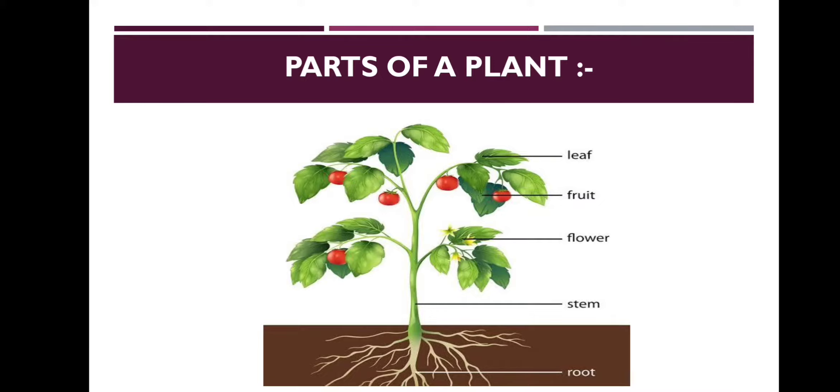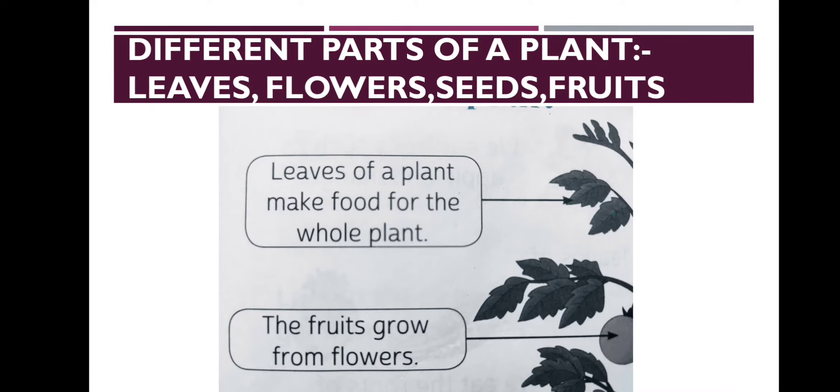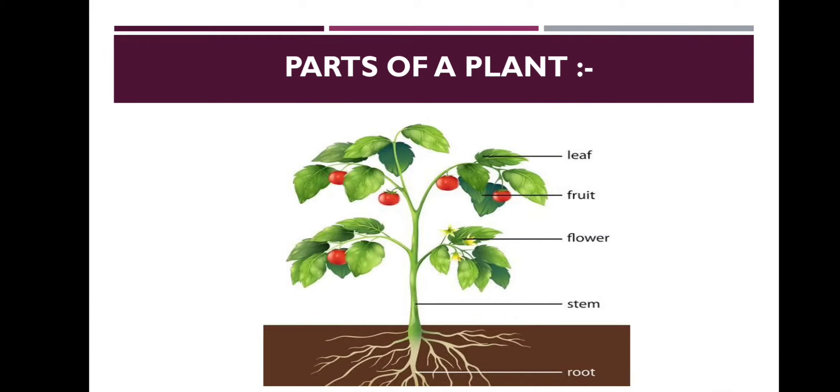So first part of the plant are leaves. Leaves are the parts of the plant and you can see them, they are green in color and they are different types according to the plant - sometimes they are pointed, sometimes they are thick, sometimes they are soft and small. It depends on the particular plant.